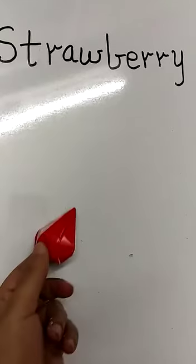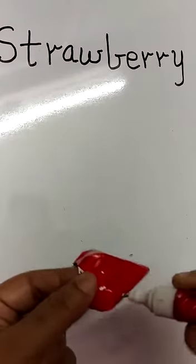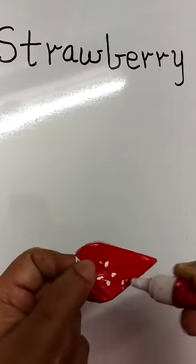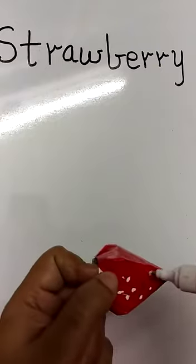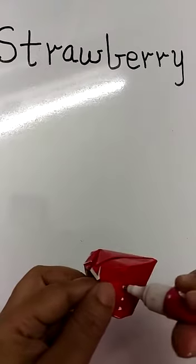So you take a white marker, or you can take any other crayon, white crayon, and put your small, small dots. Same thing, do the other. All the four sides you have to do.